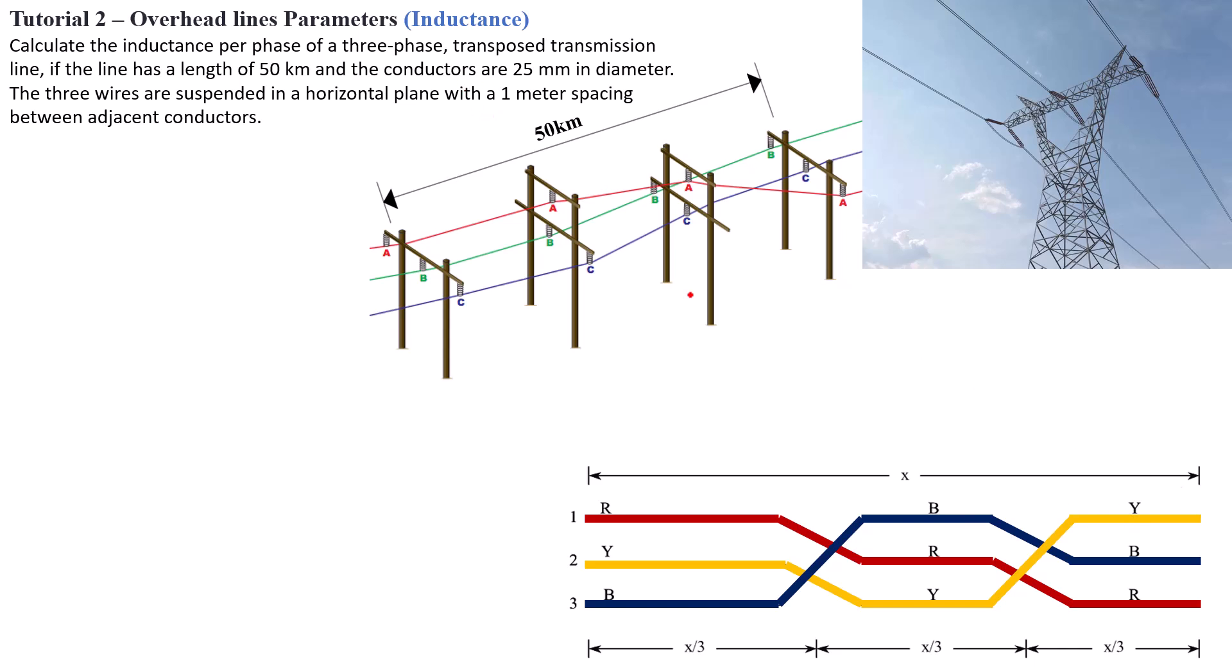Now just as we solve the resistance of the line by calculating the resistance per kilometer, the inductance is also calculated per kilometer given with a general formula: L equals 0.05 plus 0.2 times ln, the natural logarithm of dE divided by R. So the answer will be in millihenry per kilometer.